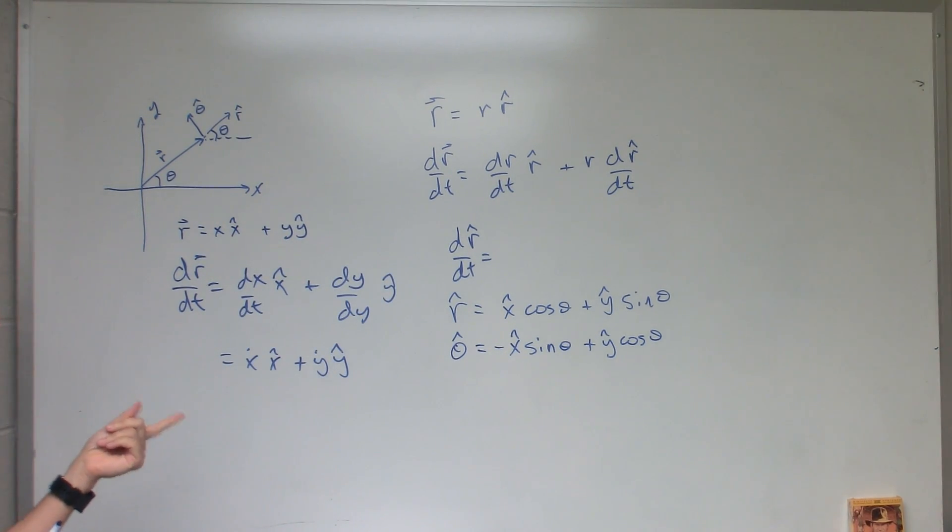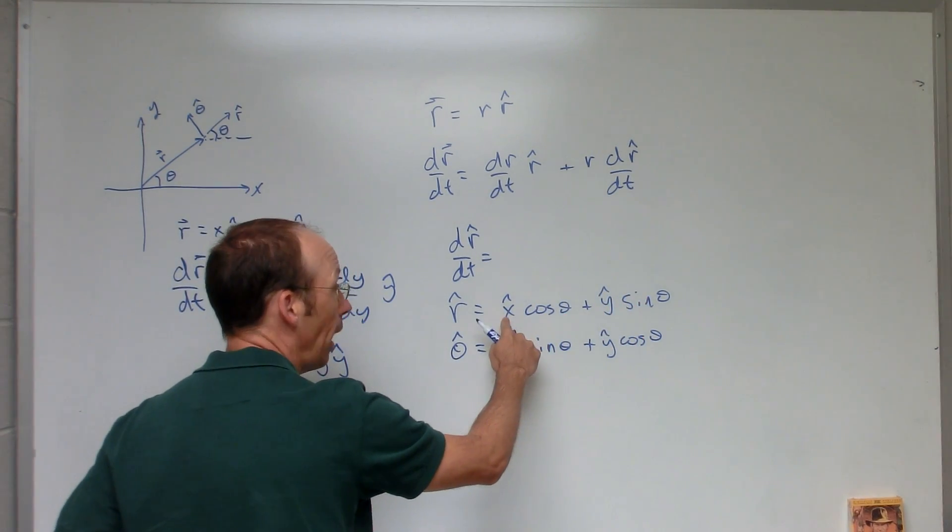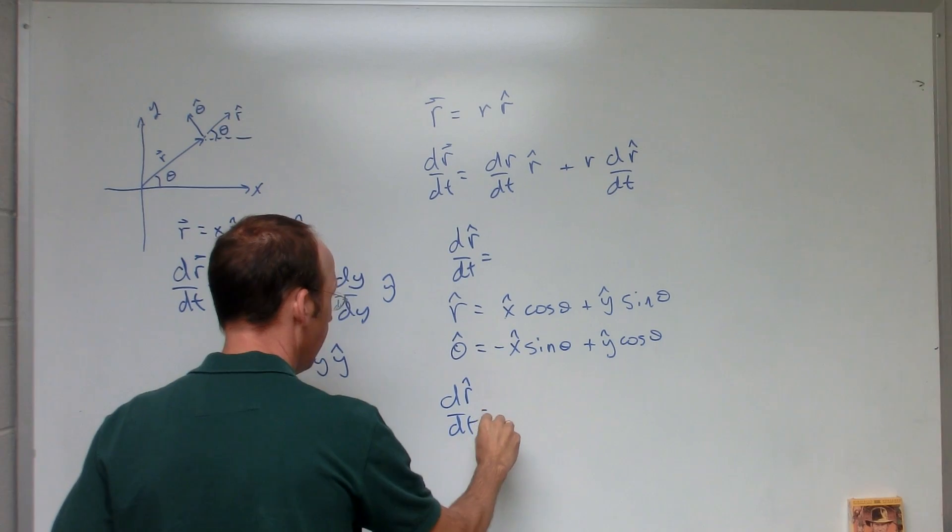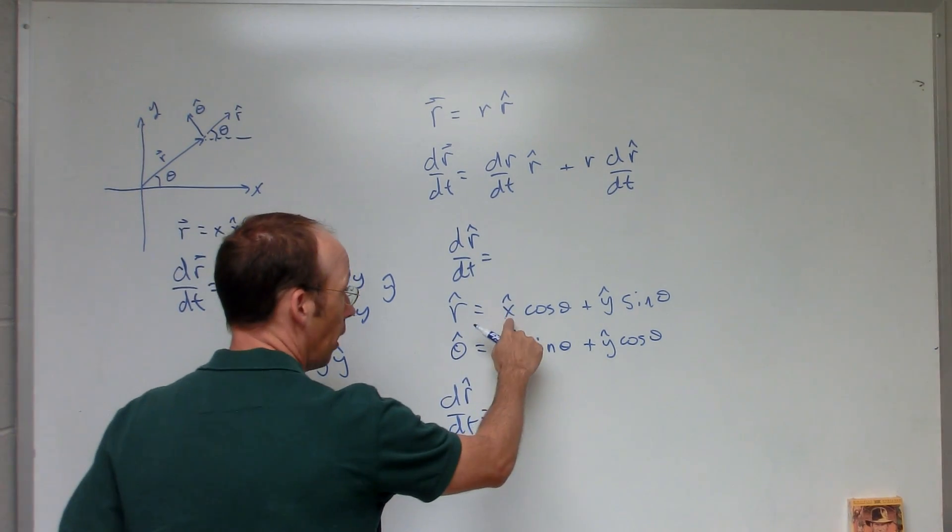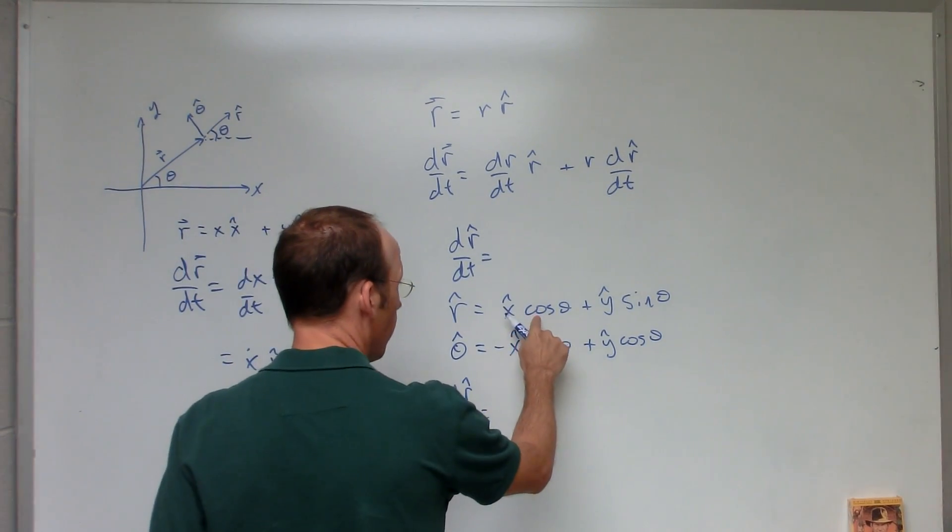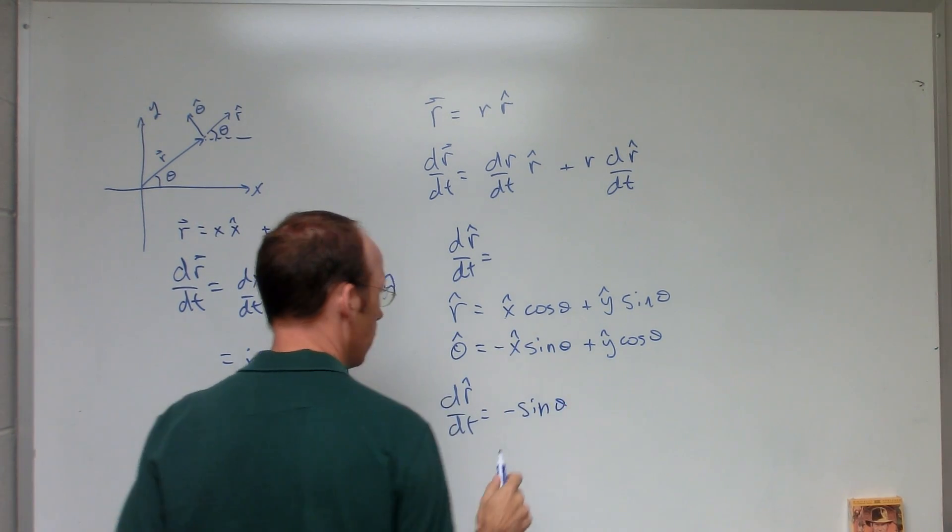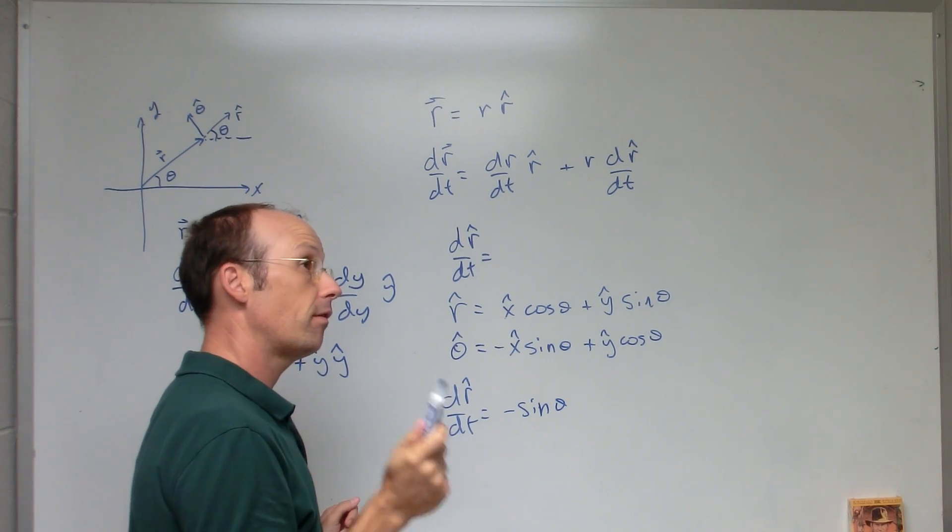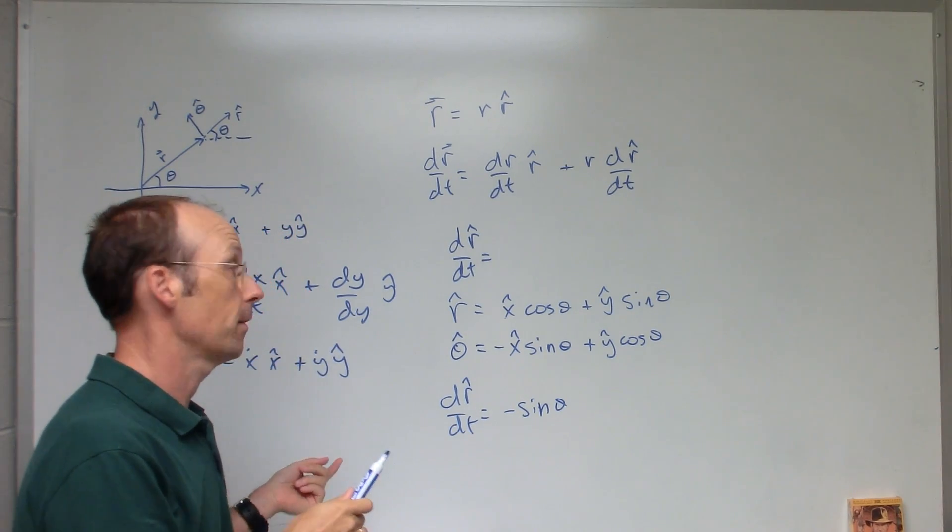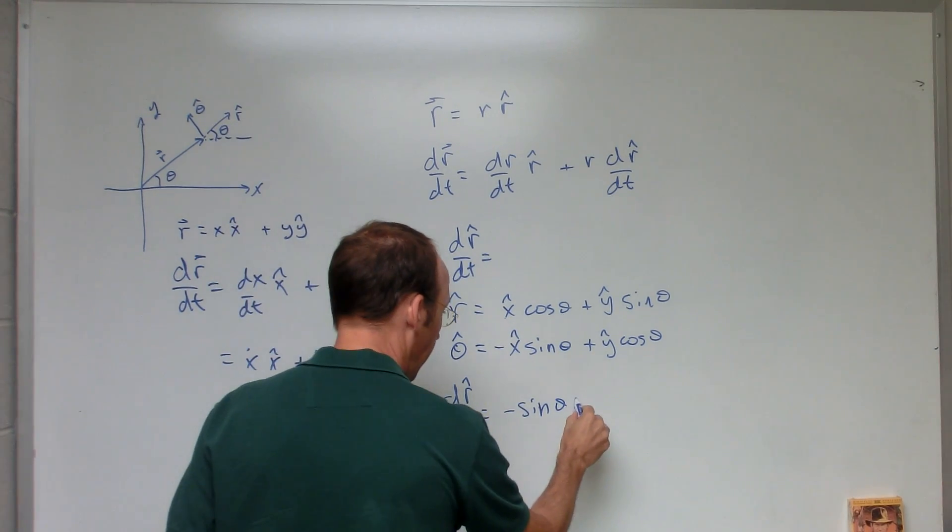So now if I want to take the derivative of r hat, I can take the derivative of this because I know x hat and y hat are constant. So dr hat/dt is going to be the derivative of that. So I have x hat, don't care about it because it's constant. So I have the derivative, the derivative of cosine is going to be negative sine theta. But that's the derivative of cosine theta with respect to theta. I'm taking the derivative with respect to time, so I also need to take the derivative of the inside of this function, which is theta. So I have a theta dot here too.